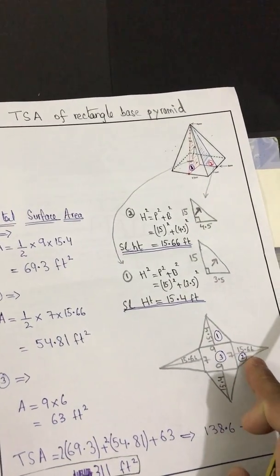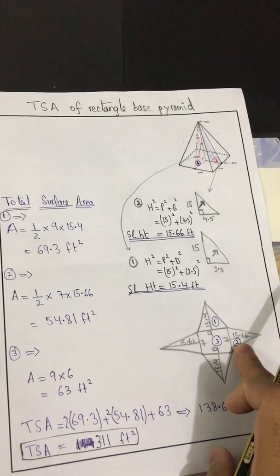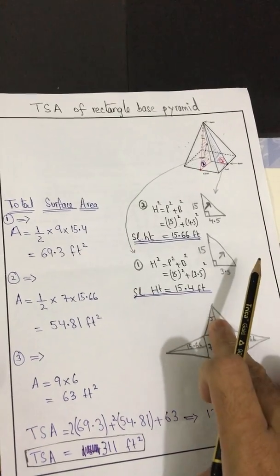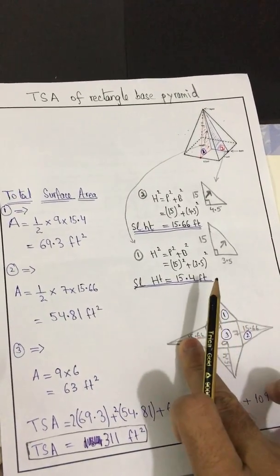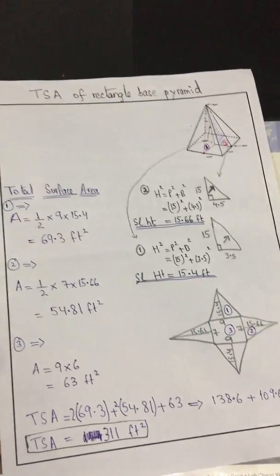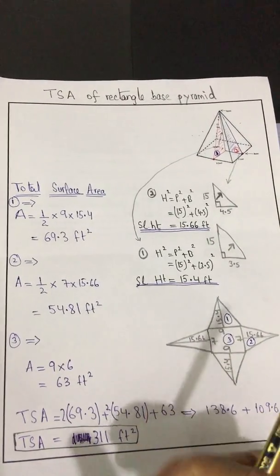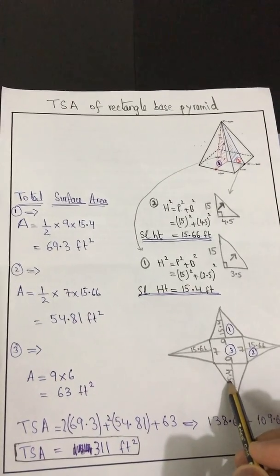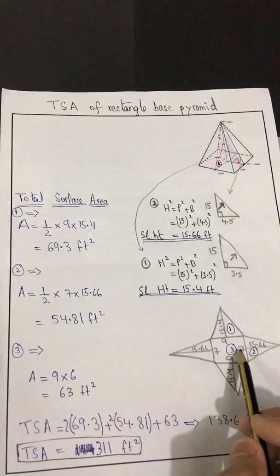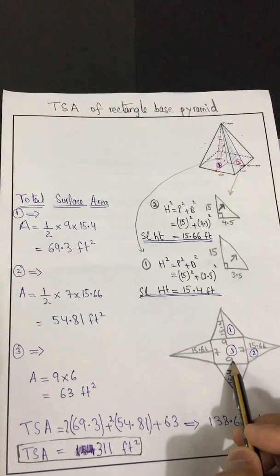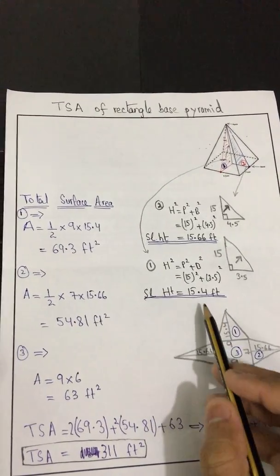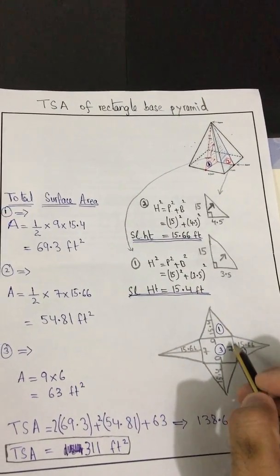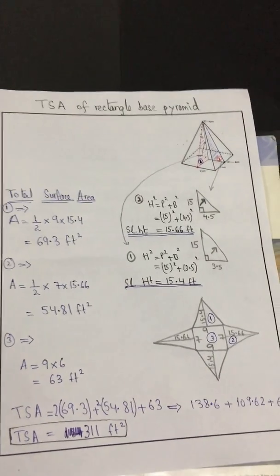On making the net diagram, triangle number two lies on this side, labeled 15.66, and this side is 15.4. The trick I discussed is that the greater side gets the smaller value of slant height. This side is 9 and this side is 7 — the greater side (9) gets the smaller slant height of 15.4, and the smaller side (7) gets the larger slant height of 15.66.